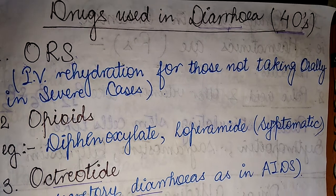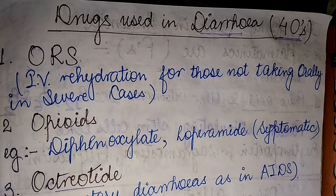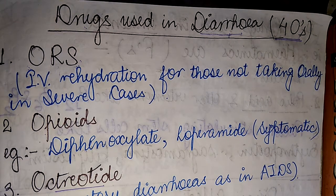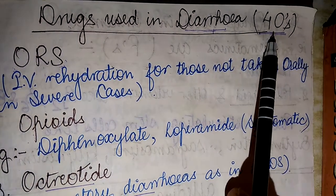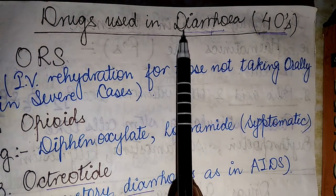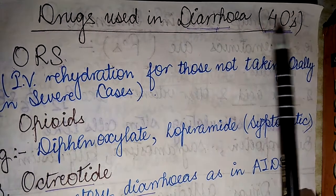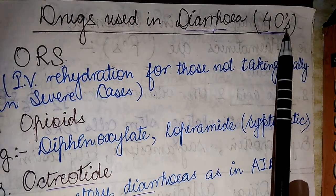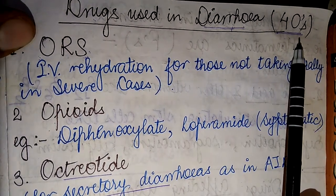The mnemonic I have made for easy recollection covers the four categories of drugs widely used in the treatment of diarrhea. I have categorized them in the form of four O's — that is what we need to remember. Now we are going to have a quick look at what these four O's are.